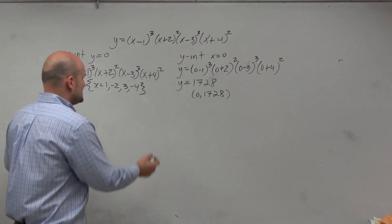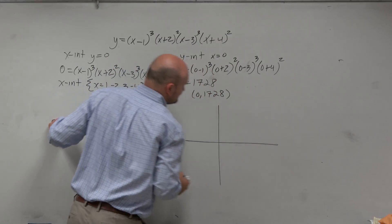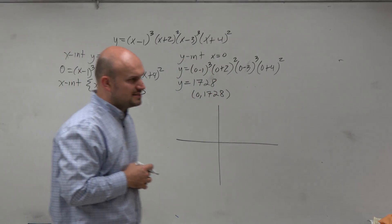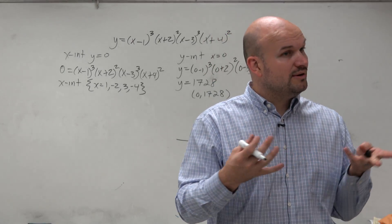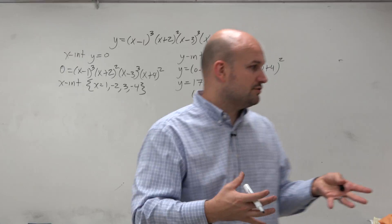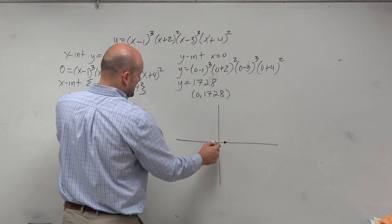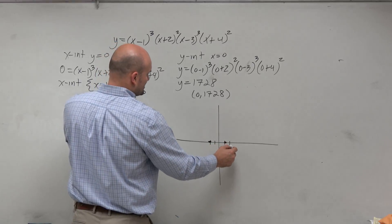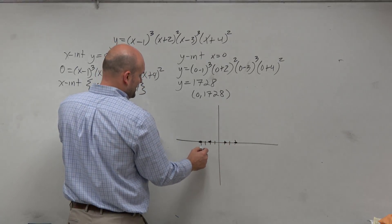Now, just knowing where the graph crosses is helpful. But remember, guys, we talked about some other things. We talked about multiplicity and end behavior. And knowing all of those is what's going to be important for us to graph. So we know the graph crosses at 1. Bless you. Crosses at negative 2, crosses at positive 3 and negative 4. So I have my x-intercepts.